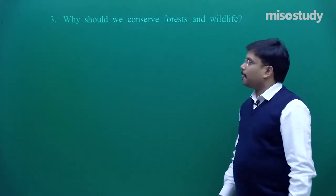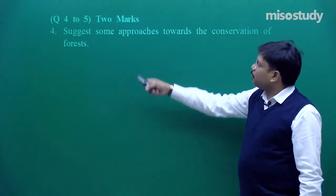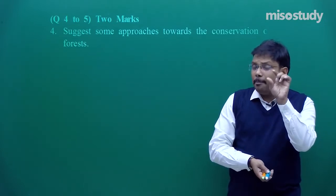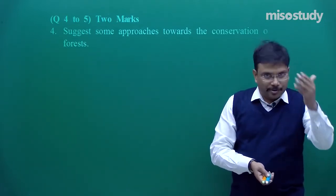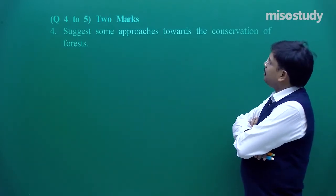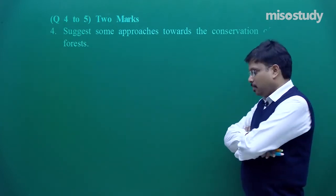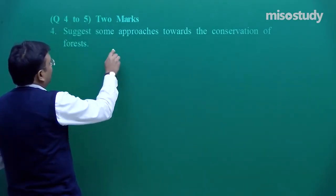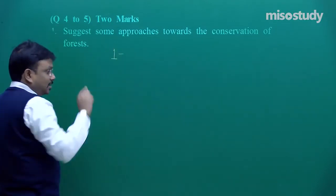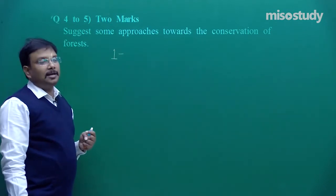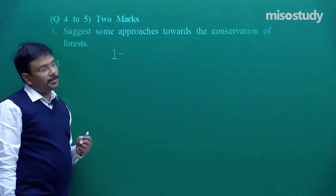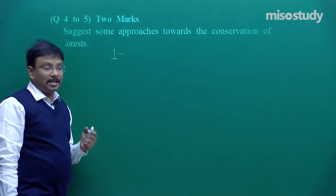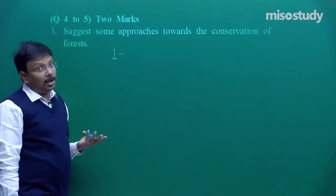These three questions were for one mark. After this comes two-mark questions — question number 4 and 5. The marks decide the amount of information you should provide. Question 4 is: suggest some approaches towards the conservation of forest. A few measurements or methods I already suggested. I want to suggest one or two more steps. I understand it is the necessity of the time that you have to remove the green cover — you have to construct new highways, establish new housing societies, new industries. That is acceptable; without these, how can we survive?